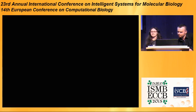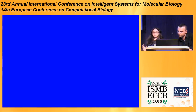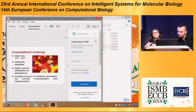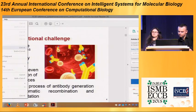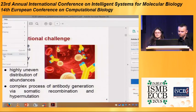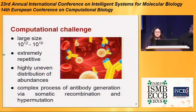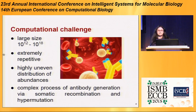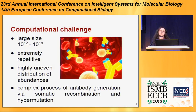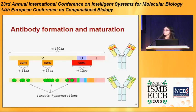Antibody repertoire is extremely large. Also, it's highly repetitive since some different antibodies can have similar sequences. Also, abundances of different antibodies are highly uneven due to clonal expansion, for example. And all these properties are results of complex processes of antibody generation.